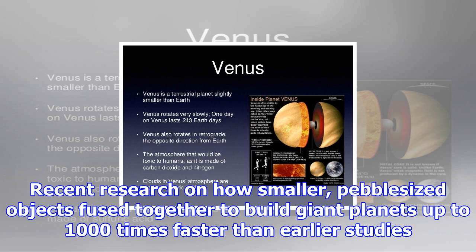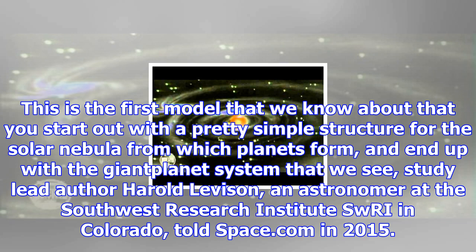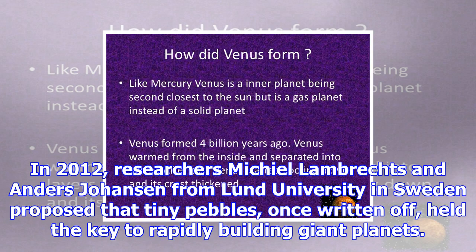Fomalhaut B, an exoplanet with a 2,000-year orbit around its star, could also be an example of a world formed through disk instability, though the planet could also have been ejected due to interactions with its neighbors. The biggest challenge to core accretion is time — building massive gas giants fast enough to grab the lighter components of their atmosphere.